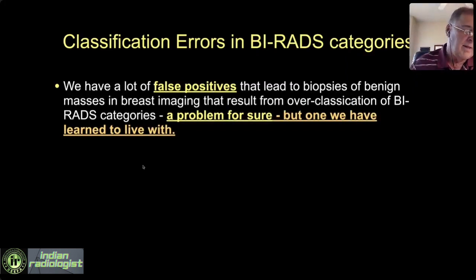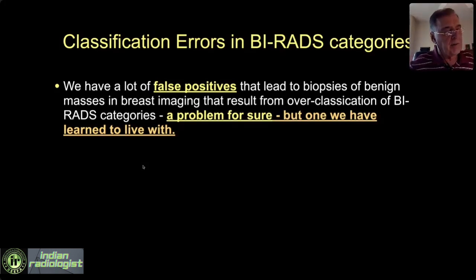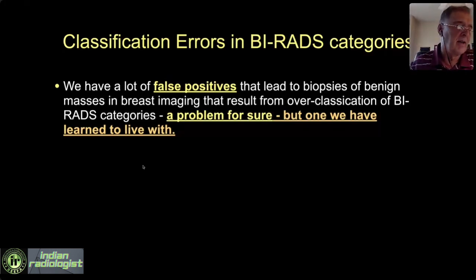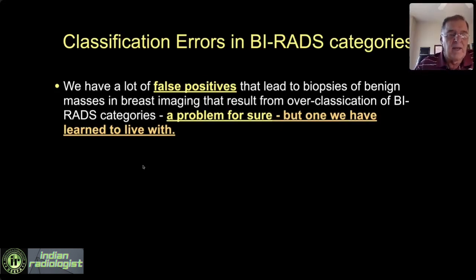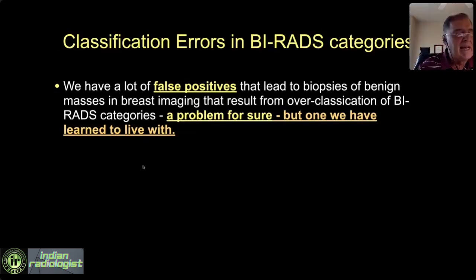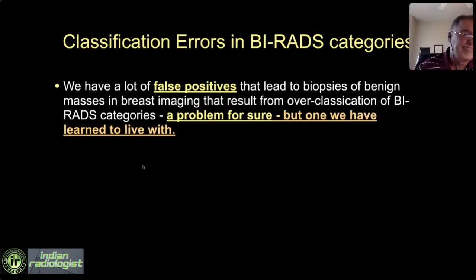We all perceive that the cost of a false negative is greater than the cost of a false positive, and we correctly perceive that. We've developed an algorithm for interpreting images in which we can achieve 98% or greater sensitivity. But that comes at the cost of false positives. In the United States, body-breast hybrids — people who are body imagers who also cross-cover their partners in breasts — tend to have about four false positives for every true positive, so a true positive rate of only 20%.